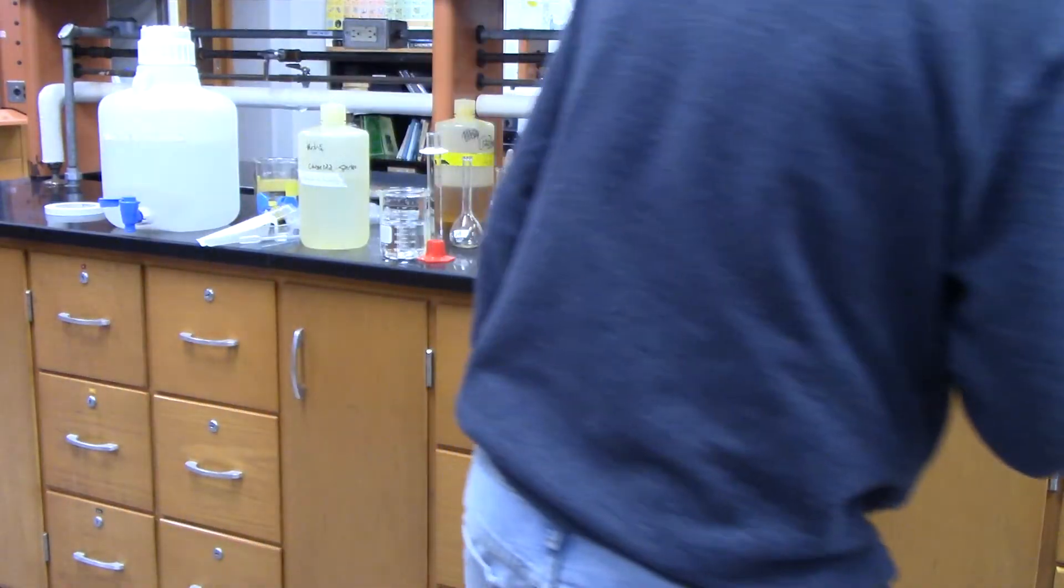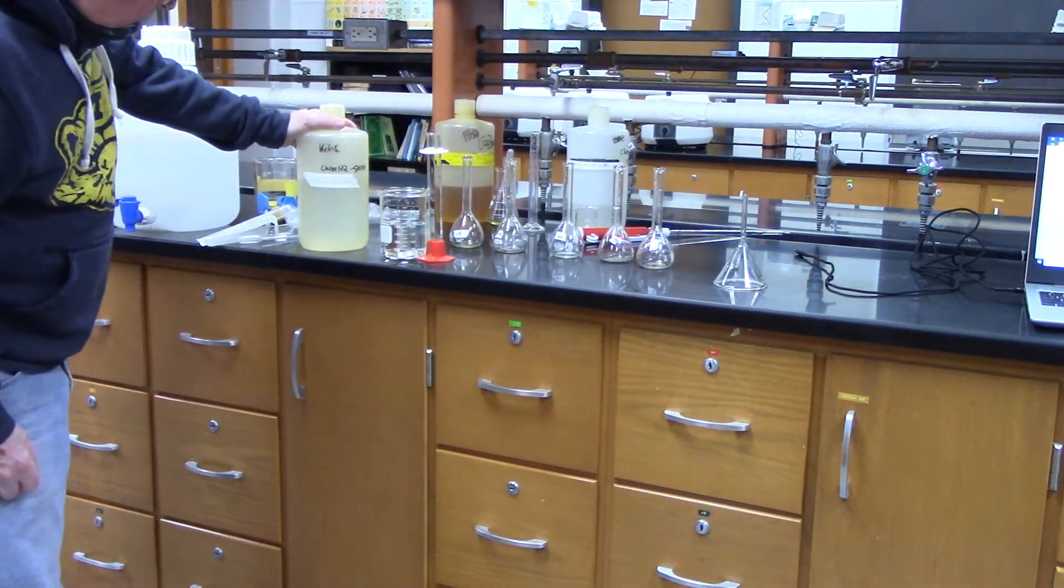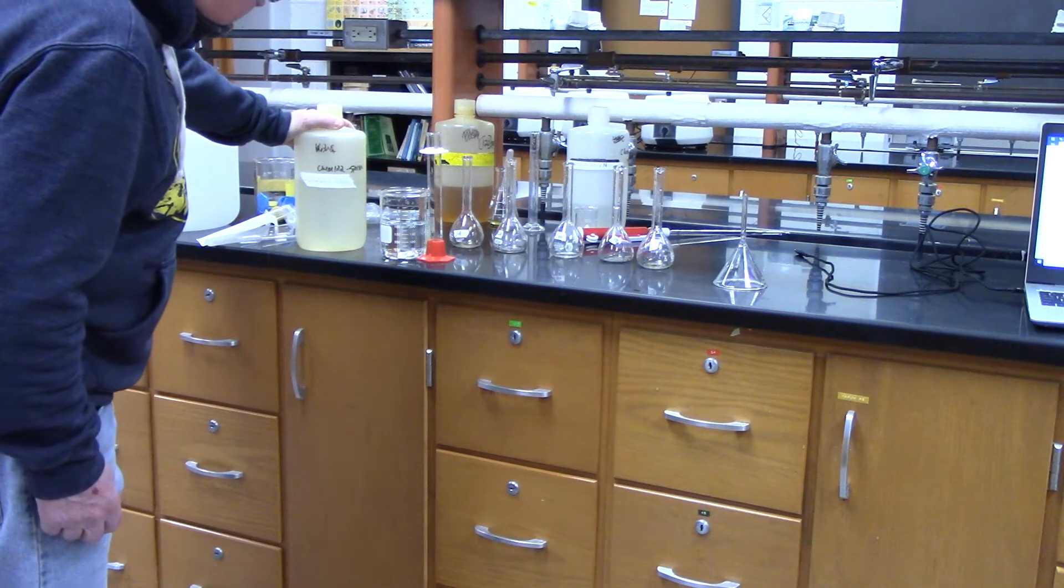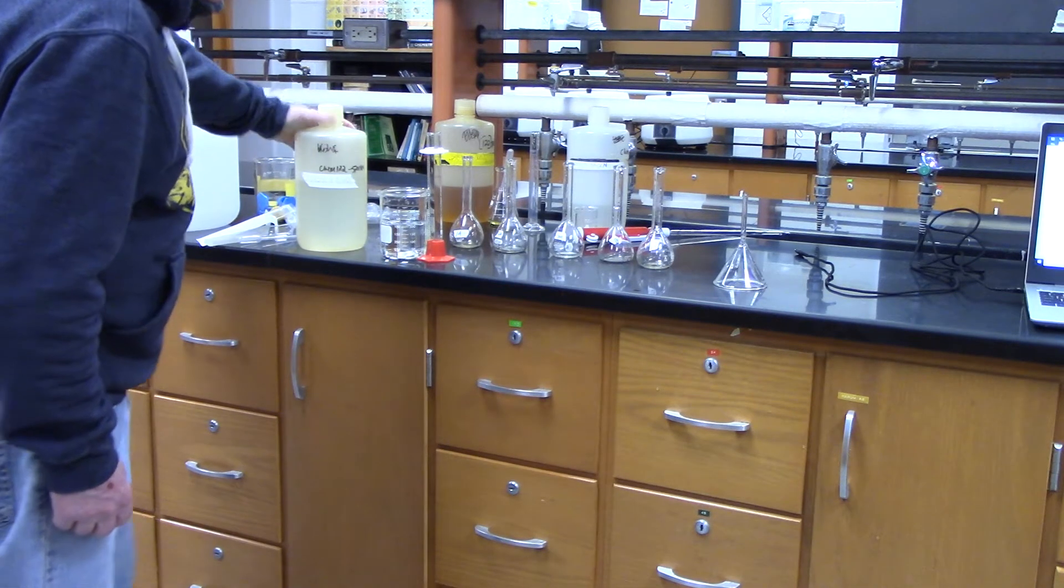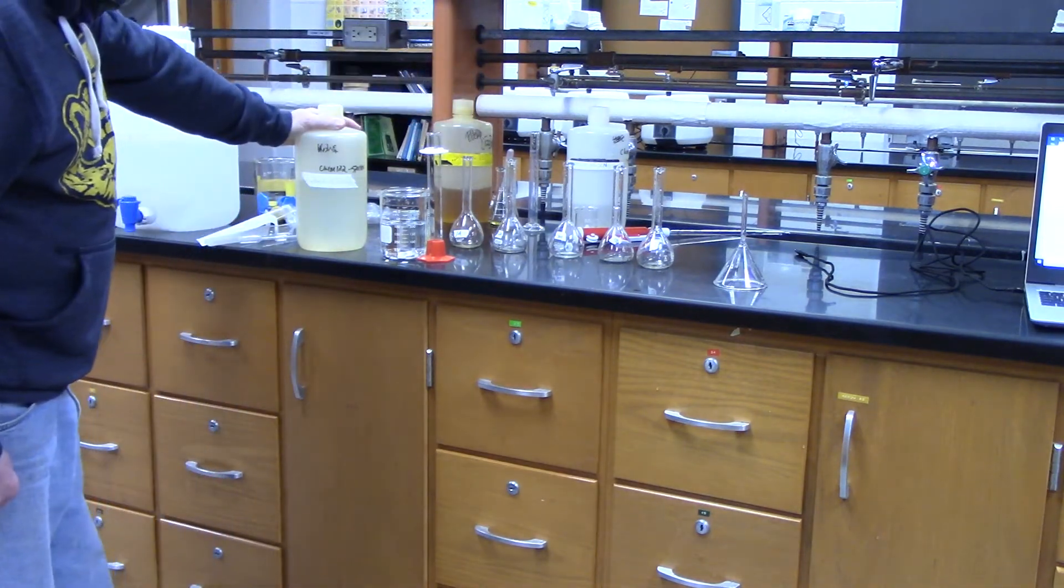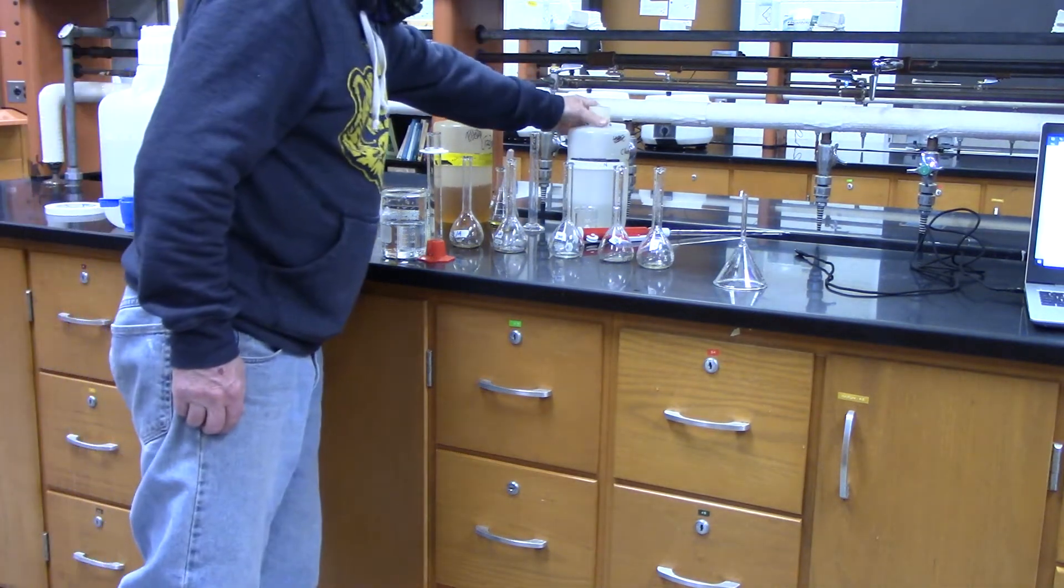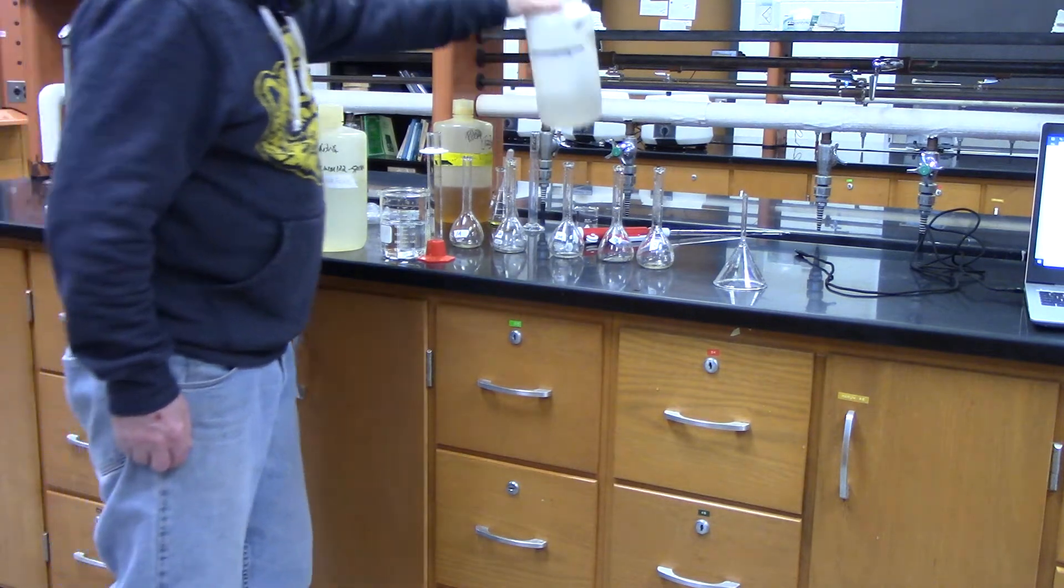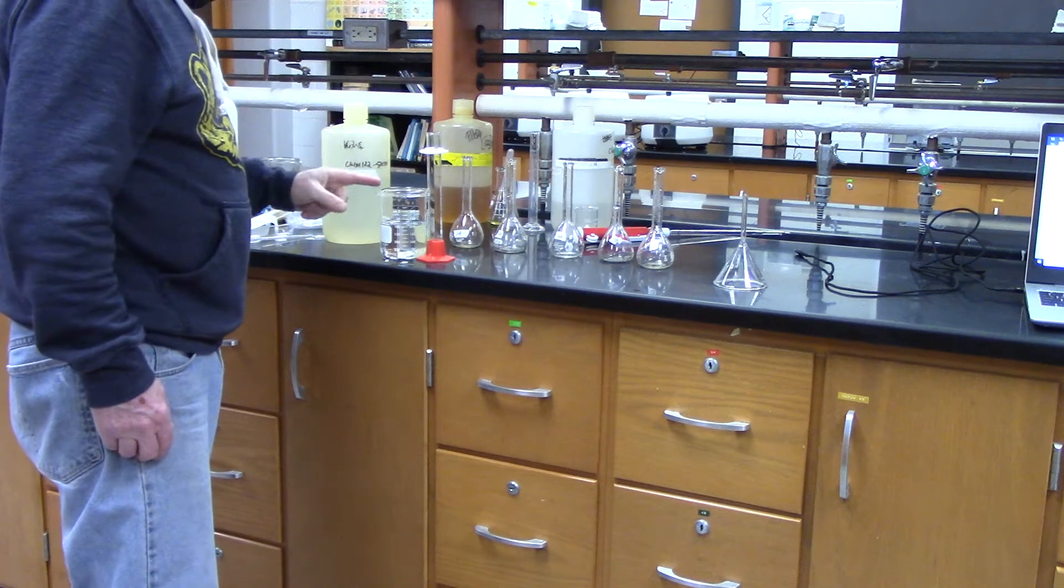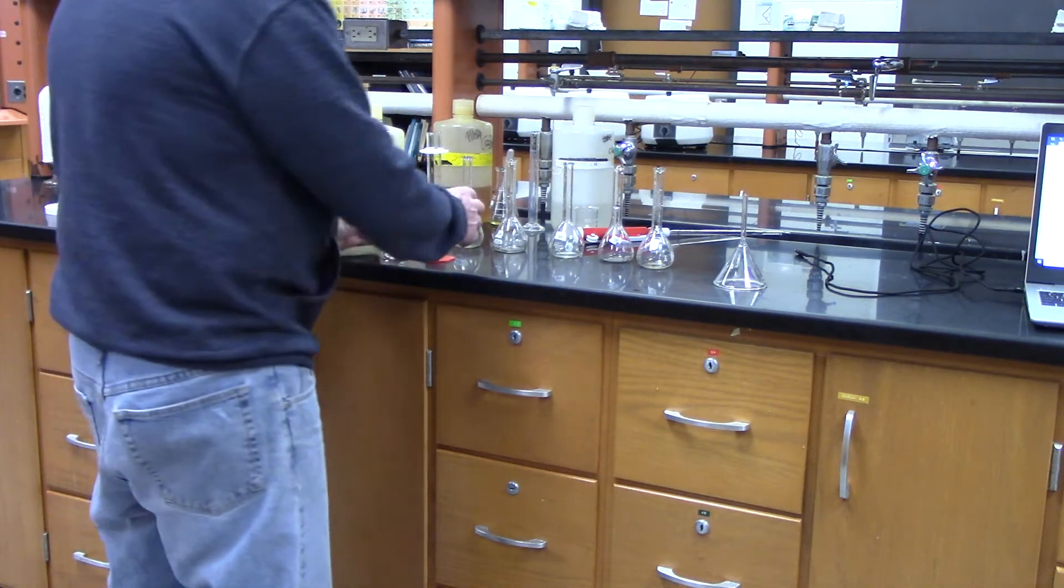Each one of these will have 50 mL of 0.002 molar iron nitrate. That's the same as this, but diluted by almost 100 times. And then what we're going to do is add varying amounts of the thiocyanate to each one and then bring them all up to 100. So I'm going to put 50 mL of the 0.002 molar iron nitrate into each one.